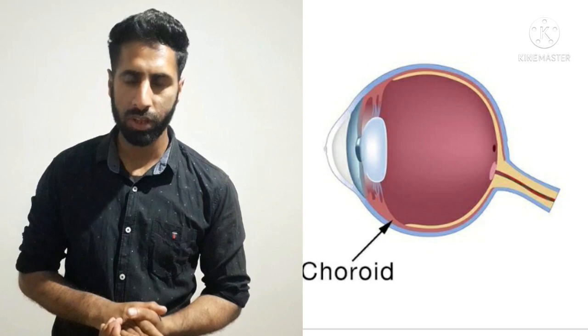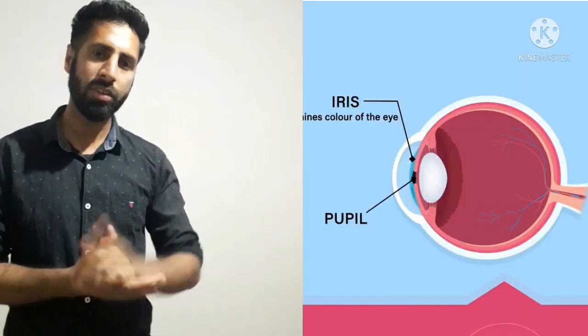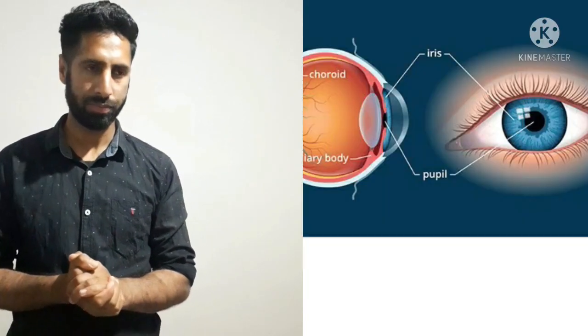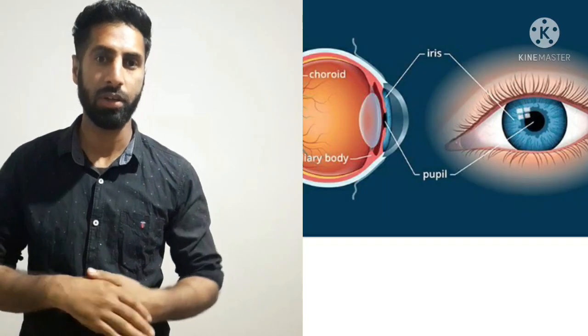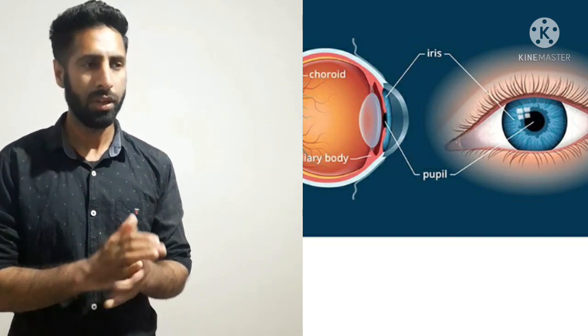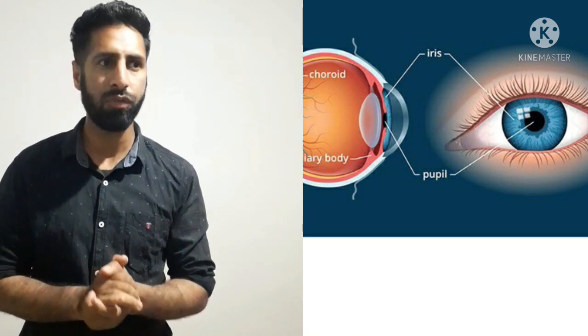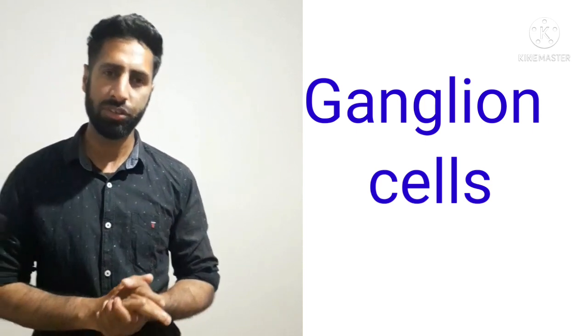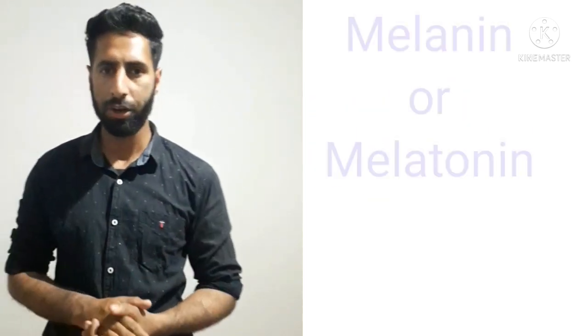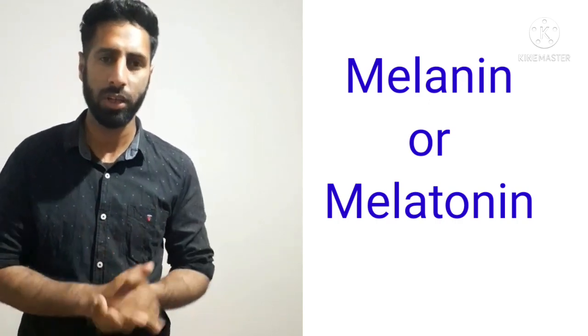Another part of the vascular tunic is the iris, as shown in the diagram. The iris is the colored portion of the eye. Different people have different colors of eyes. The human eye consists of a special type of photosensitive, non-image-forming cells called ganglion cells. These ganglion cells are responsible for the secretion of a pigment called melanin or melatonin, and this melanin gives color to the human eyes.